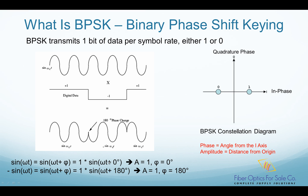So sine(ωt) is a sine wave with amplitude A = 1 and phase φ = 0 degrees, and negative sine(ωt) is a sine wave with amplitude A = 1 and phase φ = 180 degrees. BPSK can be expressed in the constellation diagram. The horizontal axis is called in-phase and the vertical axis is called quadrature phase. The distance from the origin is the amplitude A, and the angle from the horizontal axis is the phase. Data 1 is represented by amplitude 1 and phase 0 degrees; data 0 is represented by amplitude 1 and phase 180 degrees.